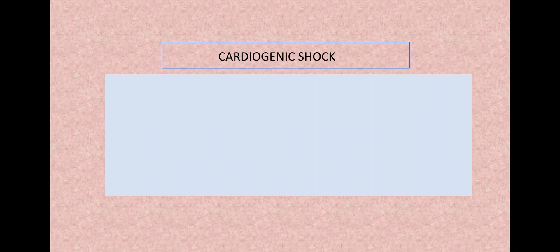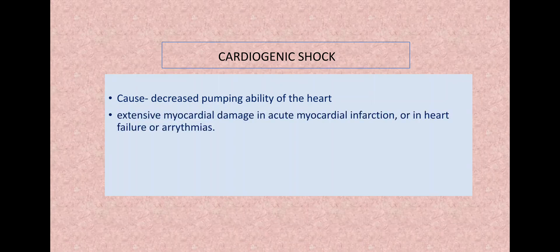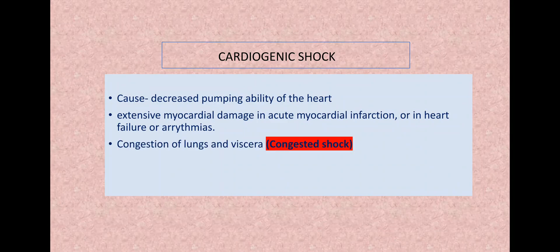Now another type. We have discussed hypovolemic shock, distributive shock. Now this is the third one, cardiogenic shock. Cardio, so there is some problem in the heart. The heart is not acting as a proper pump. Why? Why it is not proper? Maybe because of extensive damage to the myocardium in acute MI or in heart failure or in arrhythmias. So there will be back pressure on the lungs and the viscera. So the lungs and the other viscera, liver and all, they'll be full of blood.